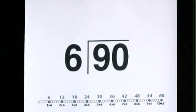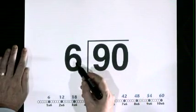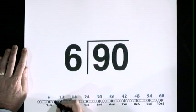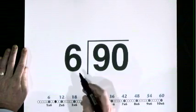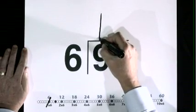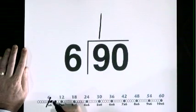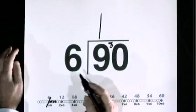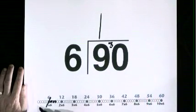90 divided by 6. 9 lives here. 6 goes into 9, 1 time, remainder 3. 6 goes into 30, 5 times.